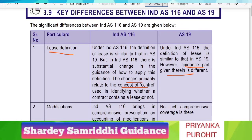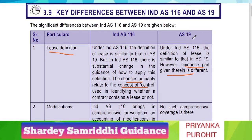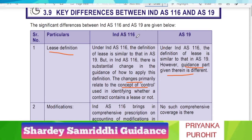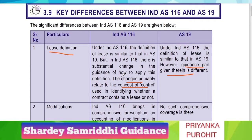For example, there is a job work contract given to you by another person and he also provides you with the place to carry out such job work. As per AS 19, this contract will be purely a job work contract and will not be included in AS 19. But under IndAS 116, since the person has provided you with the place, this job contract will also come under IndAS 116 Leases, because the place will entirely be in control of the person who provided you with the job work.